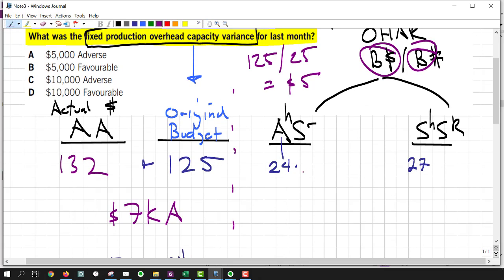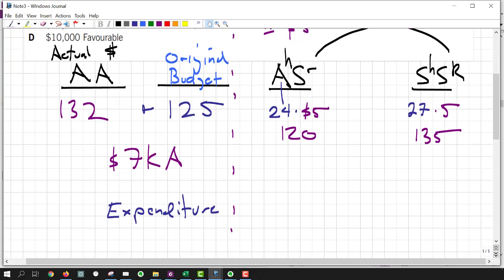And we just plug that in. So the AS is $120,000. The SS is $135,000. It's always efficiency on the far right. So the missing piece of the puzzle then is capacity. That's the strange one. That's the one we only have with the fixed overheads. That's the one that they're looking for in this question.